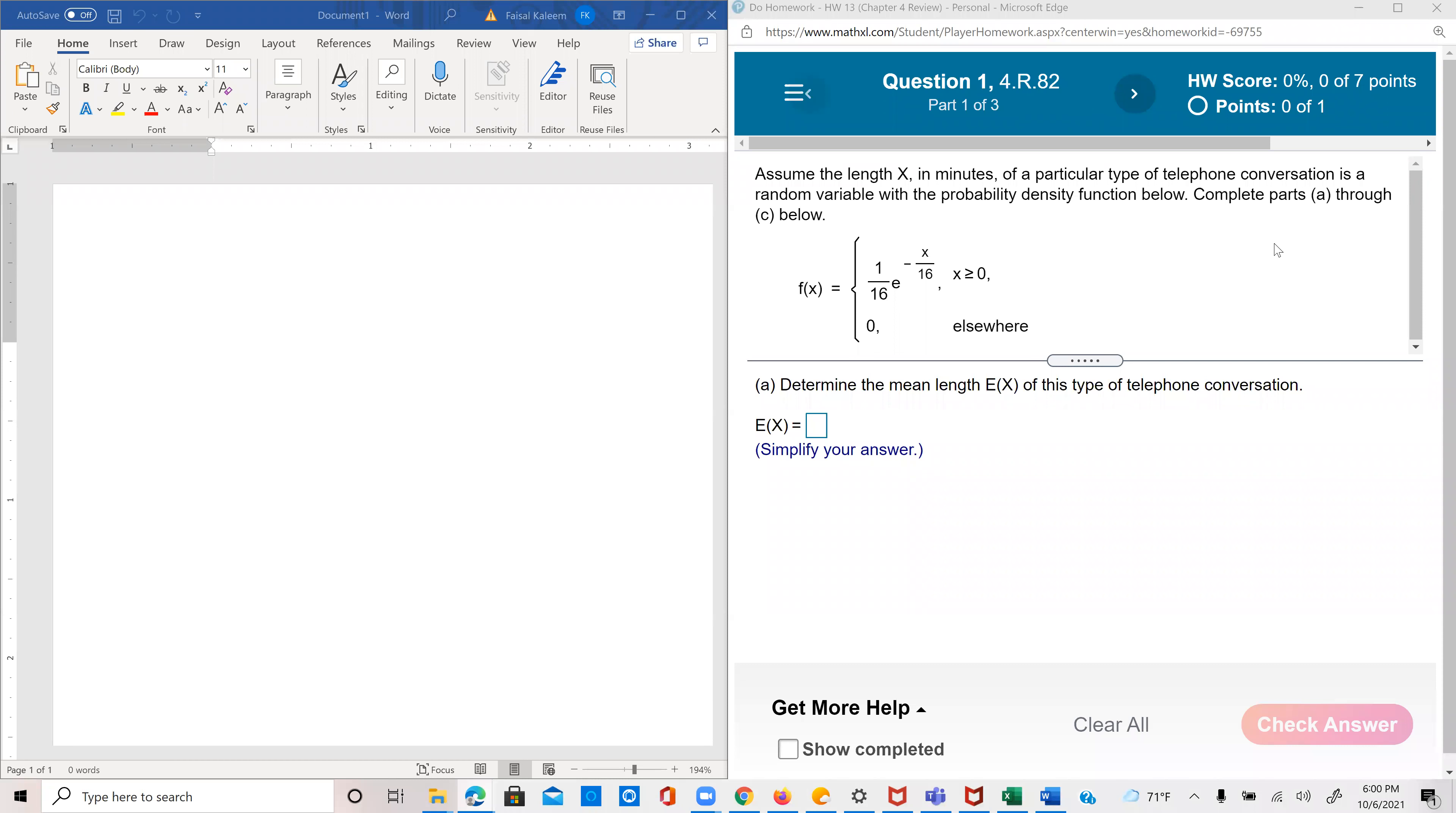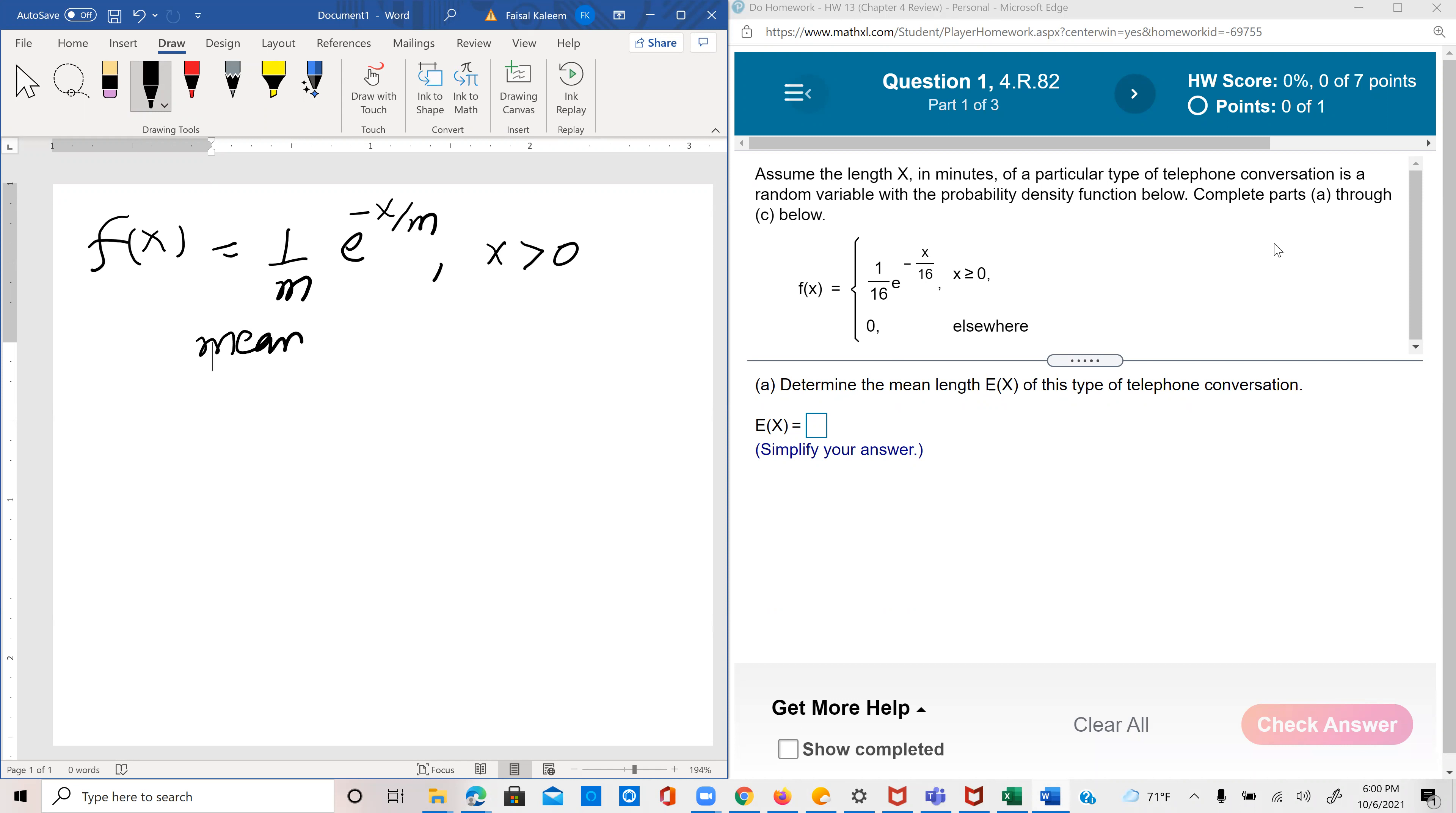So we know that for the distribution function fx equals 1 over m e to the minus x over m, not the distribution function but the density function, the mean is m and the variance is m squared.